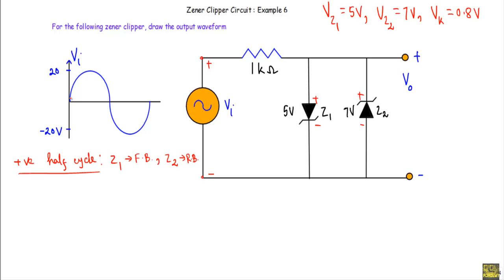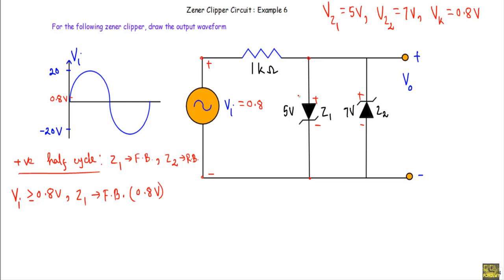Let's say the input voltage Vi is increasing gradually. When Vi becomes equal to or greater than 0.8 volt, we will get 0.8 volt between this terminal and this terminal, which is sufficient to put the Zener diode Z1 in forward bias. From the Zener diode model, we know that when a Zener diode is in forward bias we can replace it with its built-in potential — a voltage source of 0.8 volt. So if I denote this terminal as A and this terminal as B, Vab will be fixed at 0.8 volt.